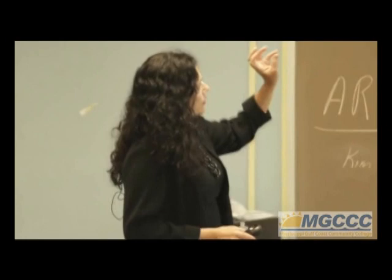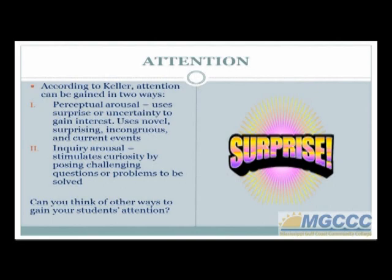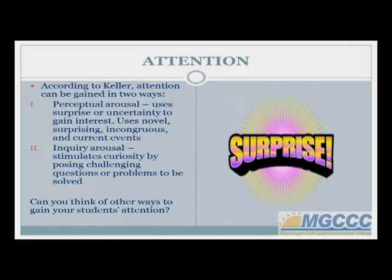We're going to look at the practical methods of using this model for face-to-face and online, and I want you to add your own ideas. The first component is how to gain attention. According to Keller, there are two ways: perceptual arousal — using surprise or uncertainty, novel surprising things you can do in the classroom — and also by asking a question or giving a challenge to the class.